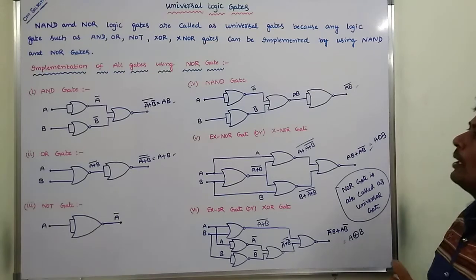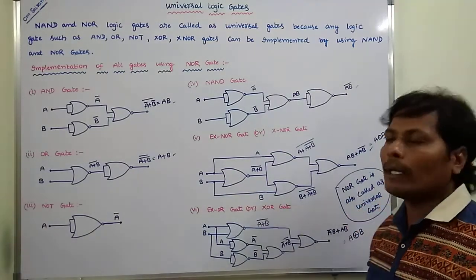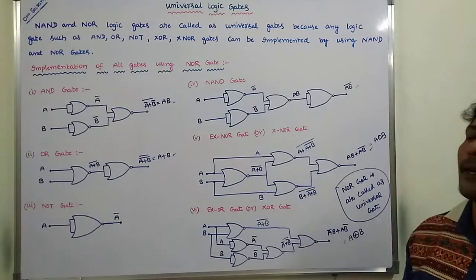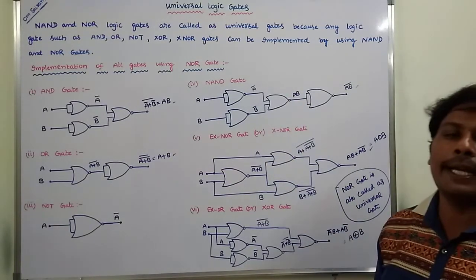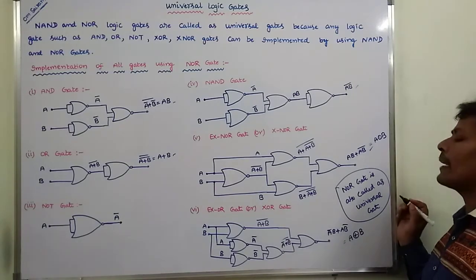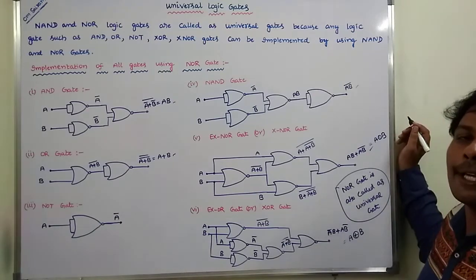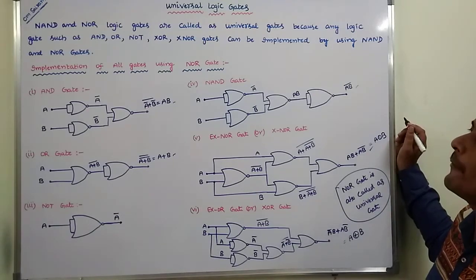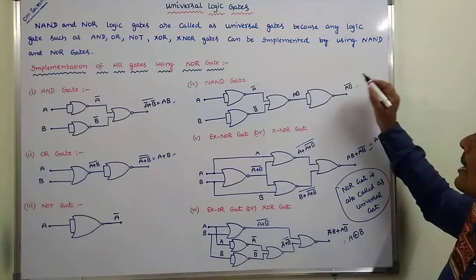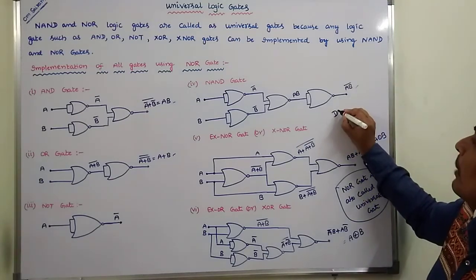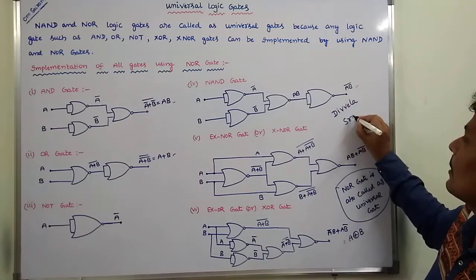So by using this NOR gate, we have to implement all gates such as AND gate, OR gate, NOR gate, NAND gate, exclusive NOR gate, exclusive OR gate. Hence, we can say that NOR gate is also called as universal gate. Thank you for watching this video. If you like this video, please share this video with your friends and classmates and please subscribe to my channel.